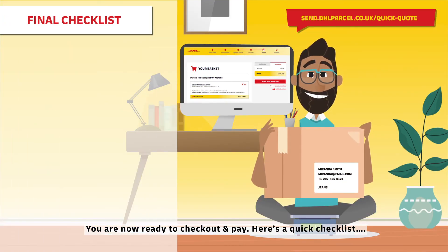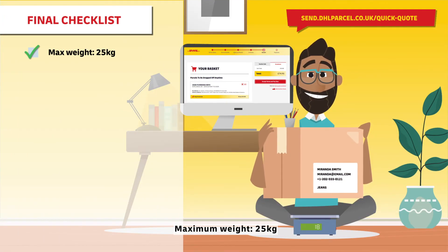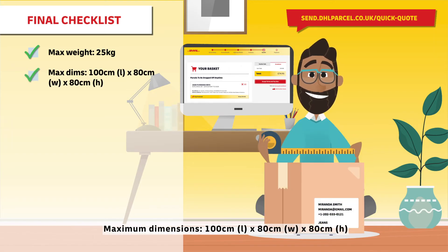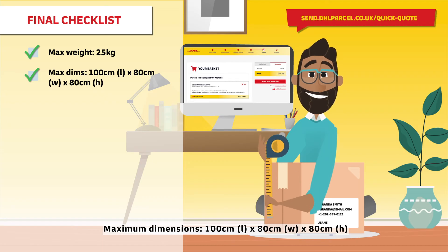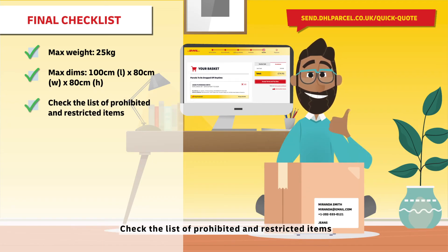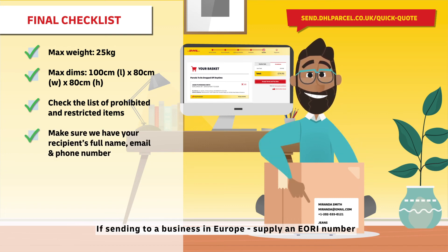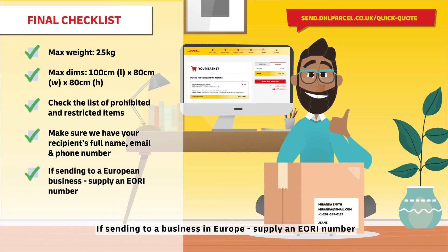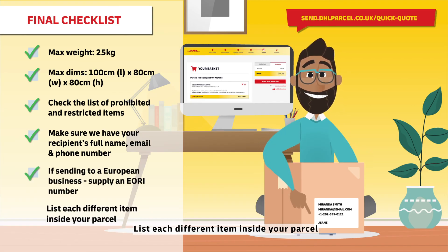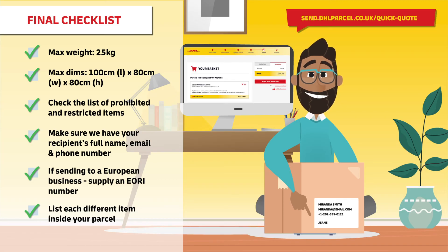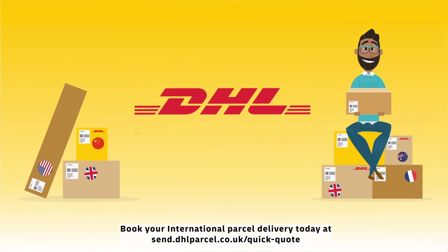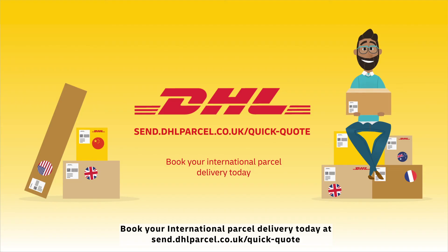Here's a quick checklist. Maximum weight: 25 kg. Maximum dimensions: 100 cm length by 80 cm width by 80 cm high. Check the list of prohibited and restricted items. Make sure we have your recipient's full name, email and phone number. If sending to a business in Europe, supply an EORI number. List each different item inside your parcel. Book your international parcel delivery today at send.dhlparcel.co.uk/quick-quote.